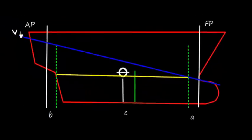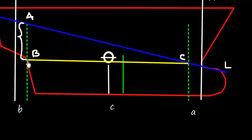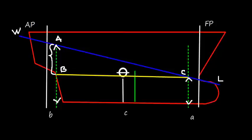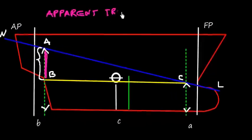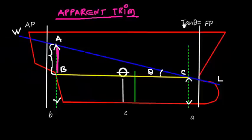Now suppose this is the waterline WL. We have a small triangle here — call it triangle ABC. Distance AB represents the trim: this is the forward draft at the draft mark and this is the aft draft at the draft mark, so the difference between them gives AB, which is called the apparent trim. If this angle is theta, then tan(theta) equals apparent trim divided by LBM.